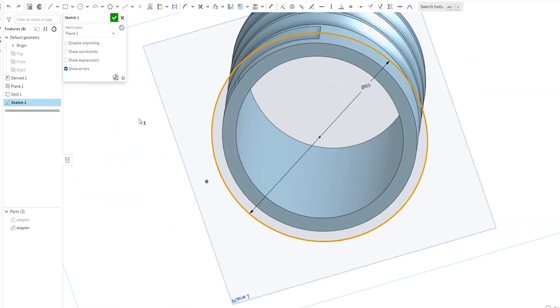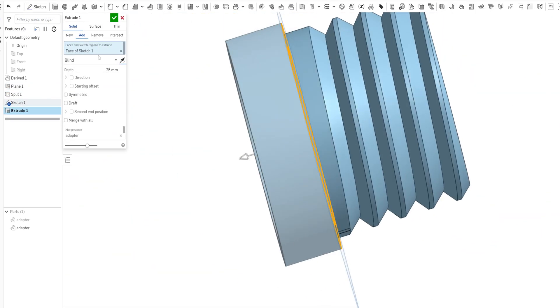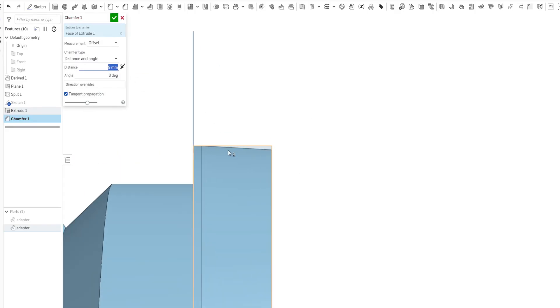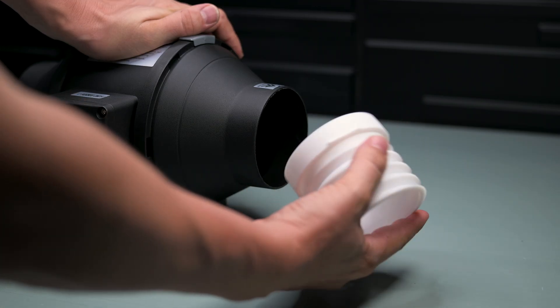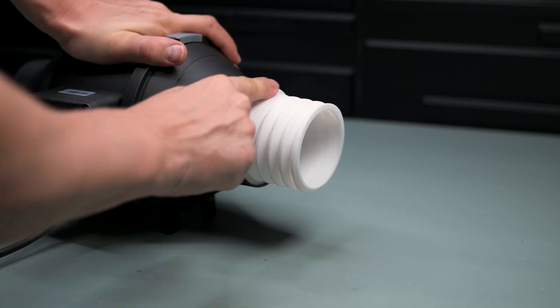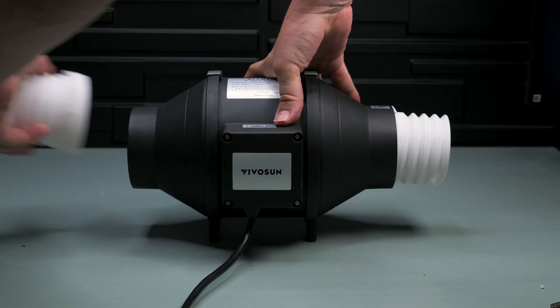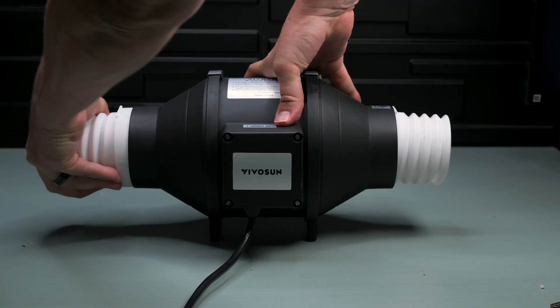I just modified the coupler I designed for version one of the system. It fits great, just needs to be a bit tighter. It's the same on both sides, so I printed two of them to connect the fan inline.